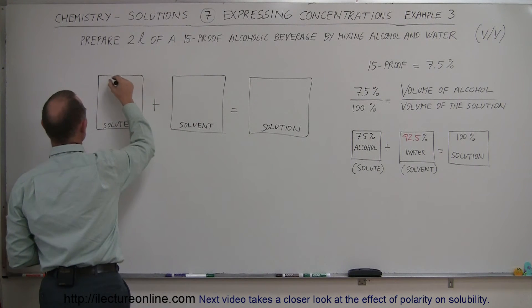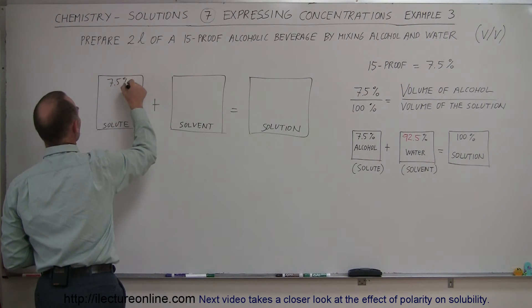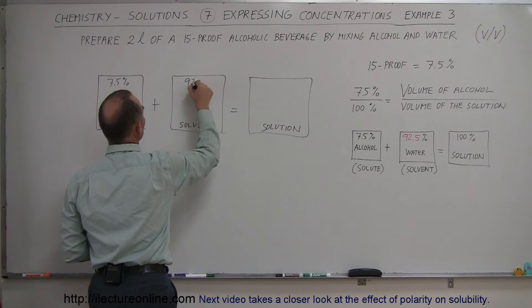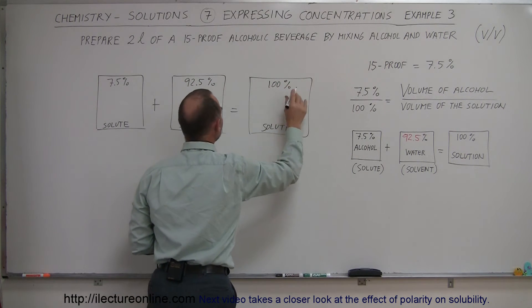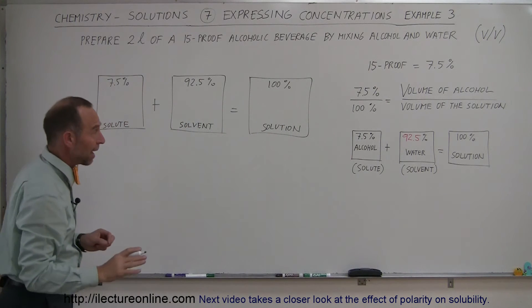Here we have 7.5% and 92.5%, which makes up the remainder to get 100% of the total solution. Again, this is by volume, not by mass.